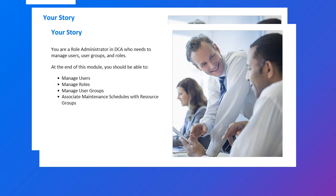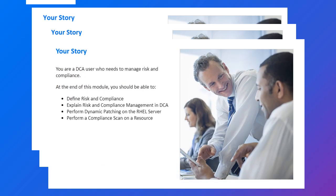Lesson 5 is intended for the administrator role and provides you an overview of the role of an administrator in DCA. After the end of this lesson, you can manage users, roles, credentials, and system configurations. You can also modify content resources and associate maintenance schedules with resource groups. Lesson 6 is intended for DCA users and helps you to learn the concepts of risk and compliance in DCA. You can also learn how to perform dynamic patching on the RHEL server and perform compile and scan on a resource.